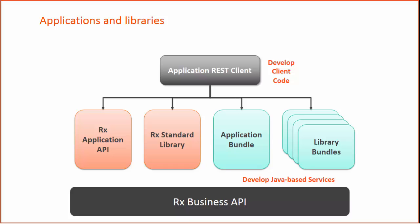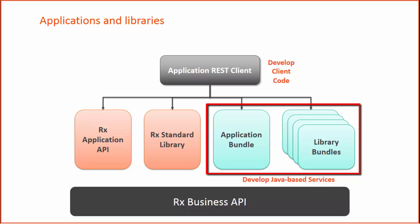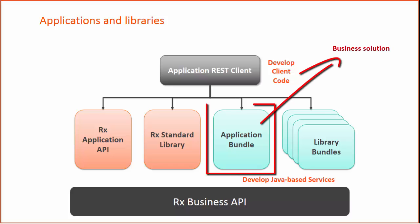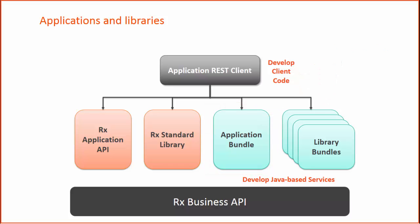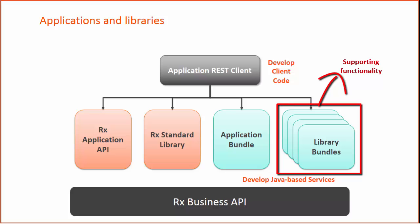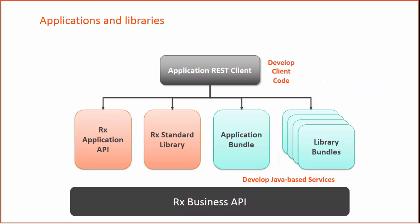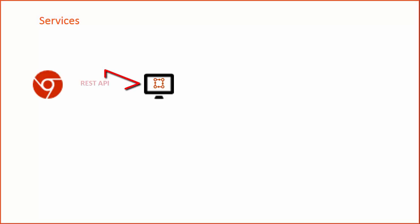The smart application development involves the development of an application or a library. All the code for an application or a library is packed and deployed as a bundle. An application can be a solution to business requirements, and a library is a supporting functionality that can be used by other bundles. A set of services allows access to platform capabilities using REST API and provides the ability to extend the platform with custom behaviors using Java and JavaScript.